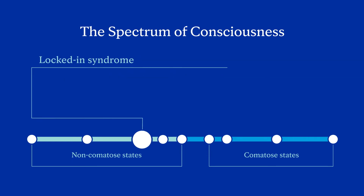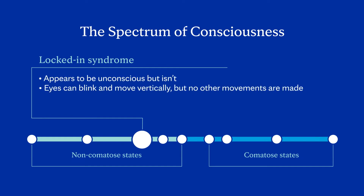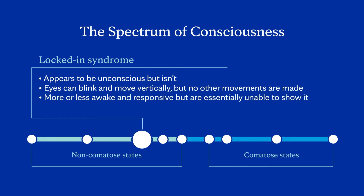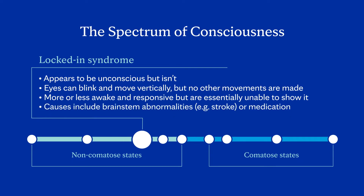Locked-in syndrome: a person appears to be unconscious, but isn't. Their eyes are open, blink, and move vertically, but they make no other movements. They are more or less awake and responsive, but are essentially unable to show it. Causes include brainstem abnormalities, such as a stroke, or medication.